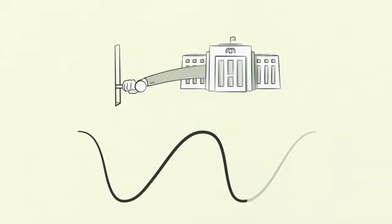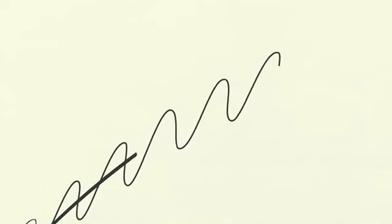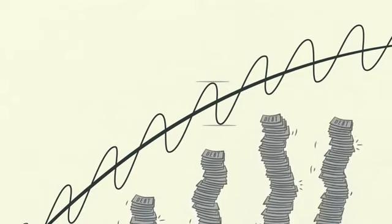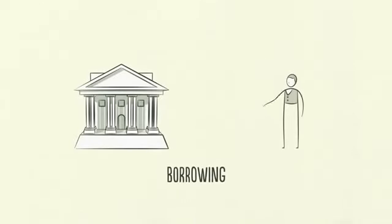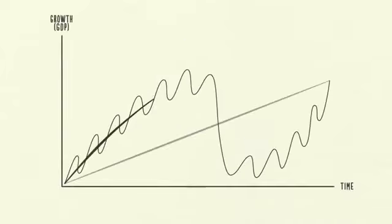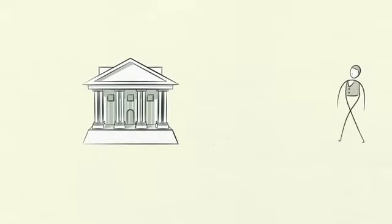The short-term debt cycle typically lasts five to eight years and happens over and over again for decades. But notice that the bottom and top of each cycle finish with more growth than the previous cycle and with more debt. Why? Because people push it — they have an inclination to borrow and spend more instead of paying back debt. It's human nature. Because of this, over long periods of time, debts rise faster than incomes, creating the long-term debt cycle.